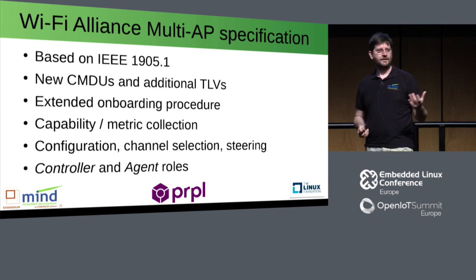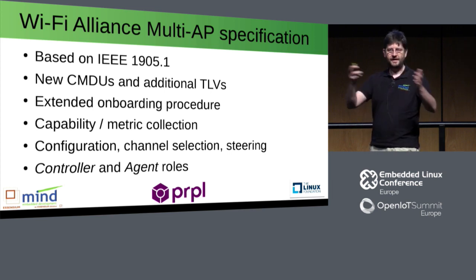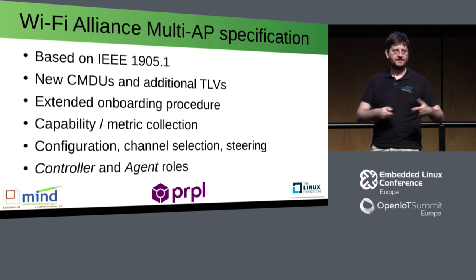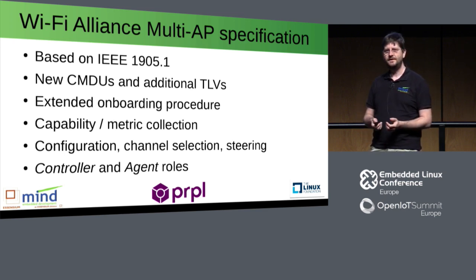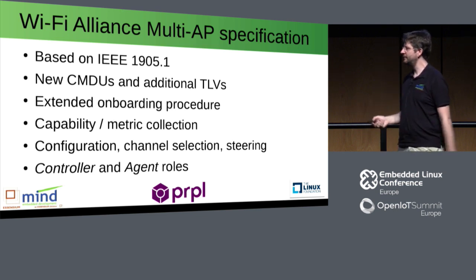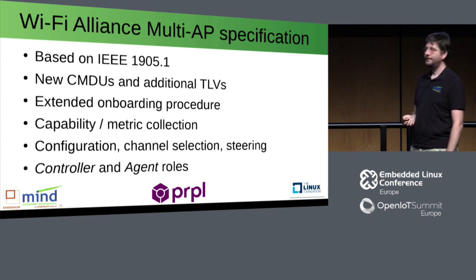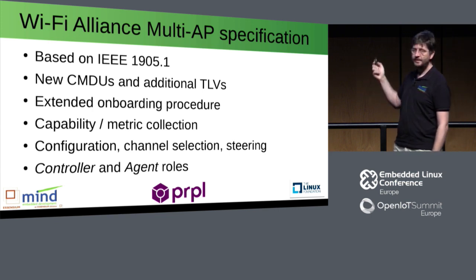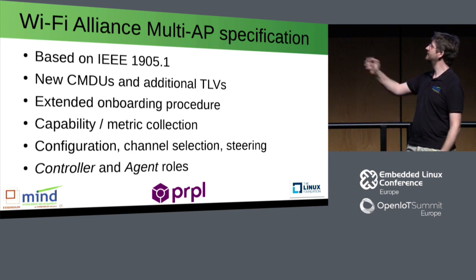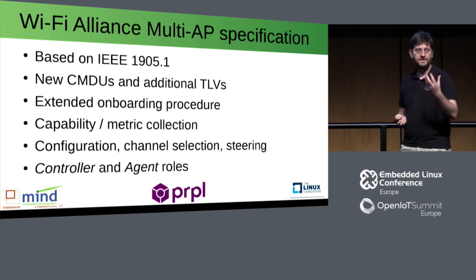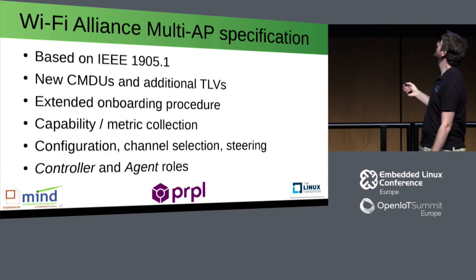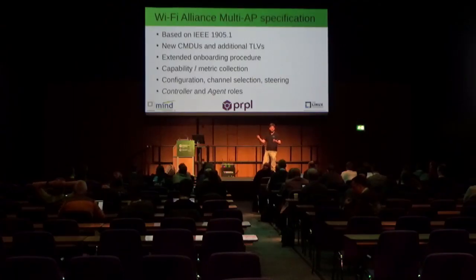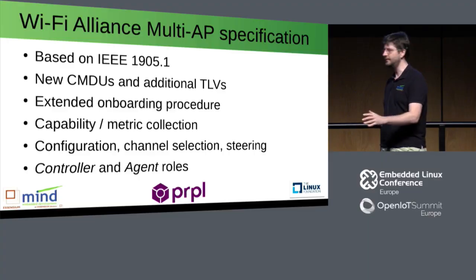The core of the extensions is a collection of capabilities and metrics. Capabilities are things like: does this access point support 5 GHz networks? Does it support 80 MHz bandwidth in 5 GHz? Does it need radar detection? The metric collection is about which beacons do you see — which other access points does a particular access point see — which stations are connected, what speeds do they get, what RSSI do they get. All of that gets sent to a central device called the controller. All the other access points are called agents. The controller, based on that capability and metric information, makes global decisions for the entire network, then sends back control frames for configuration — which SSIDs should be enabled, which channel they should use to avoid interference, and also steering — telling a specific client to connect to a specific access point.